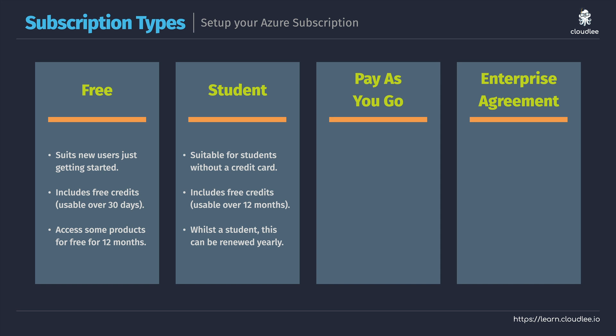Those are the free options. Let's have a chat about the different subscriptions you're commonly going to see used in the real world. Whether you're an individual or a business, it's very common to see the use of a pay-as-you-go subscription. If you have a pay-as-you-go subscription, know that there is still some free functionality that you can get access to. It's really common to confuse the free subscription and the free tier as the same thing. The free subscription is what we just discussed — free credits usable over 30 days. The free tier is actually specific services with specific configurations and limitations that Microsoft will provide you with access to for free. For example, I might want to deploy a web application using the Azure App Service free tier. It does not include all of the features that you'd get with the paid pricing models, but it is something you can use and try out, and if you've got a really small service, maybe you can use that for a while to keep your costs low.